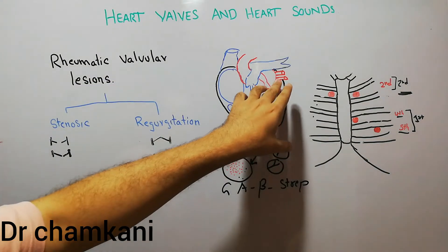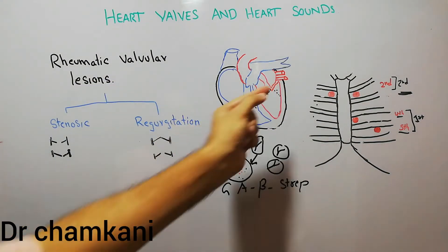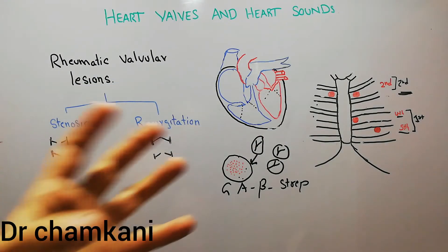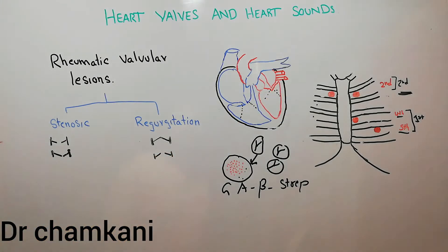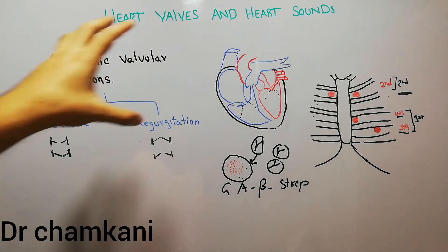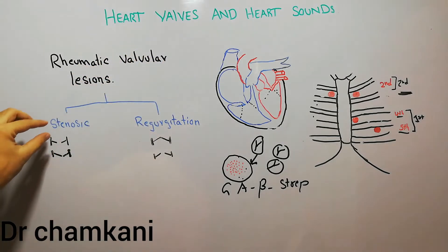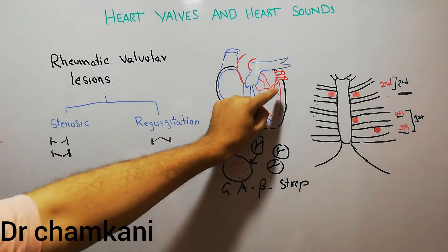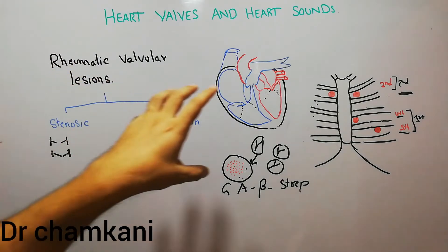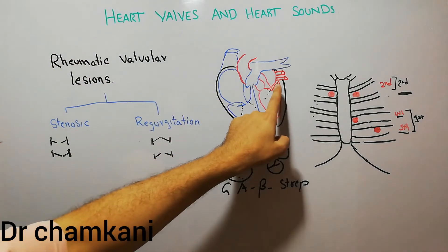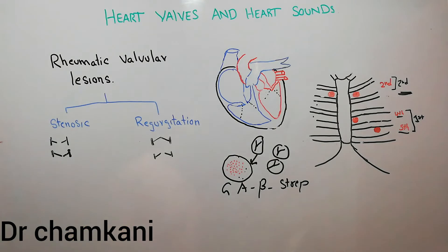When they start damaging these valves, there is inflammation and lesions start occurring on the valves, which are basically known as rheumatic valvular lesions. These valvular lesions can lead to stenosis in these valves or to regurgitation, and can also cause mixed disease. Most of the time the rheumatic valvular lesion will occur in the mitral valve, and the second most commonly involved valve is the aortic valve.